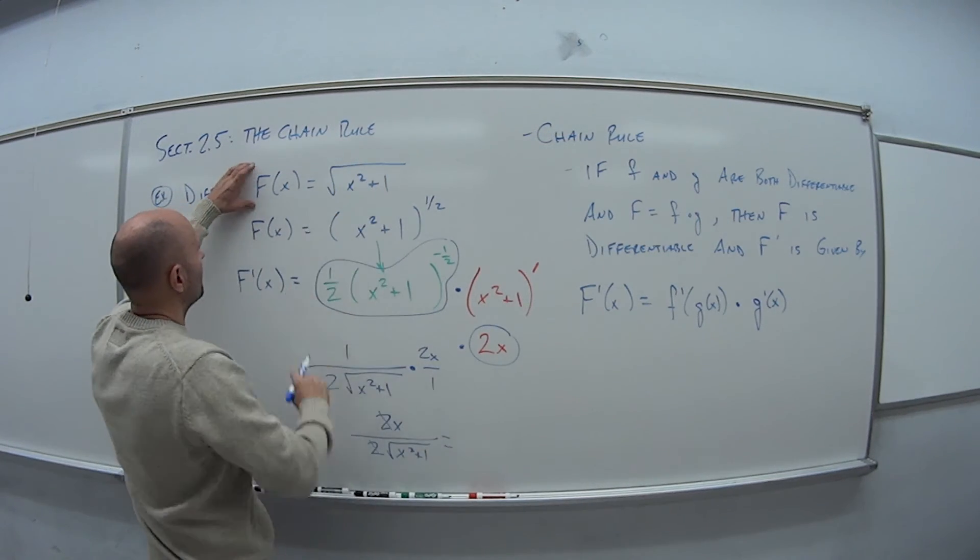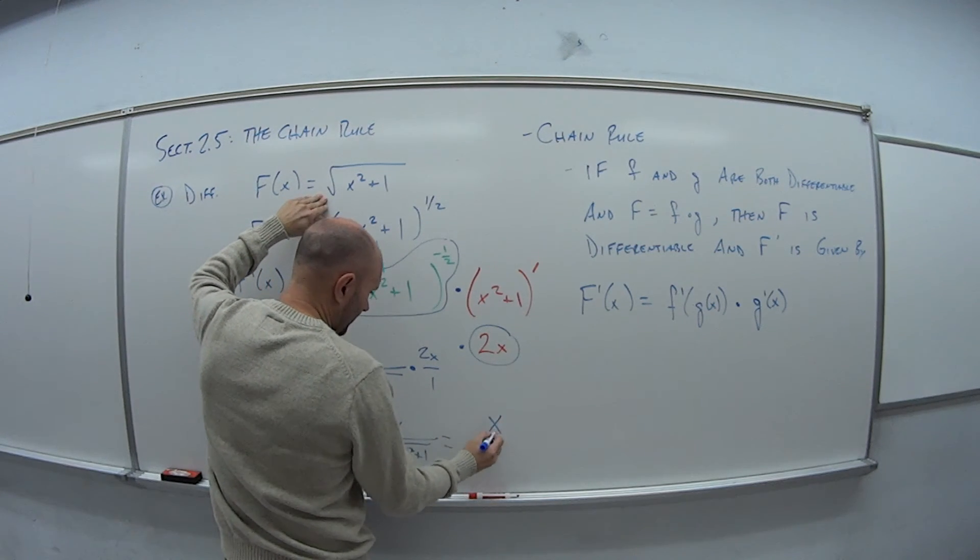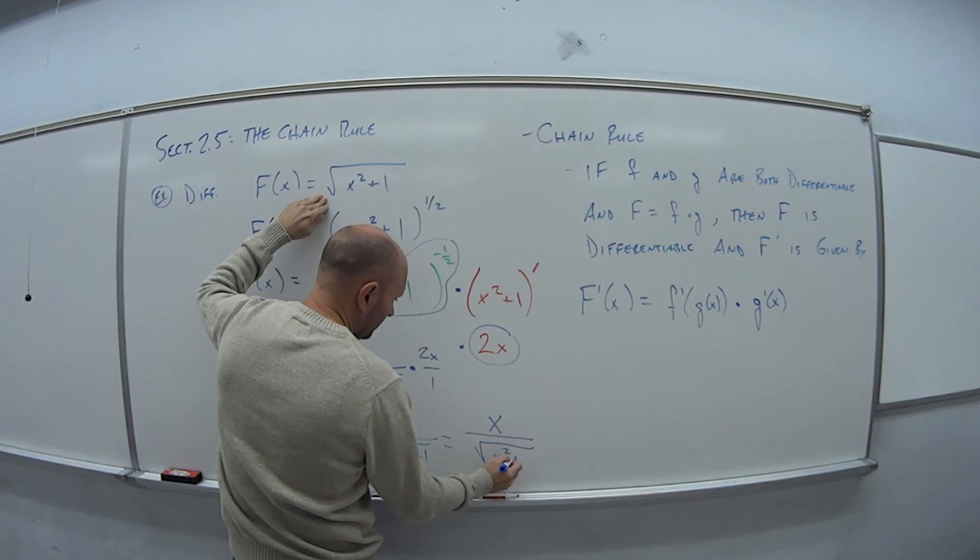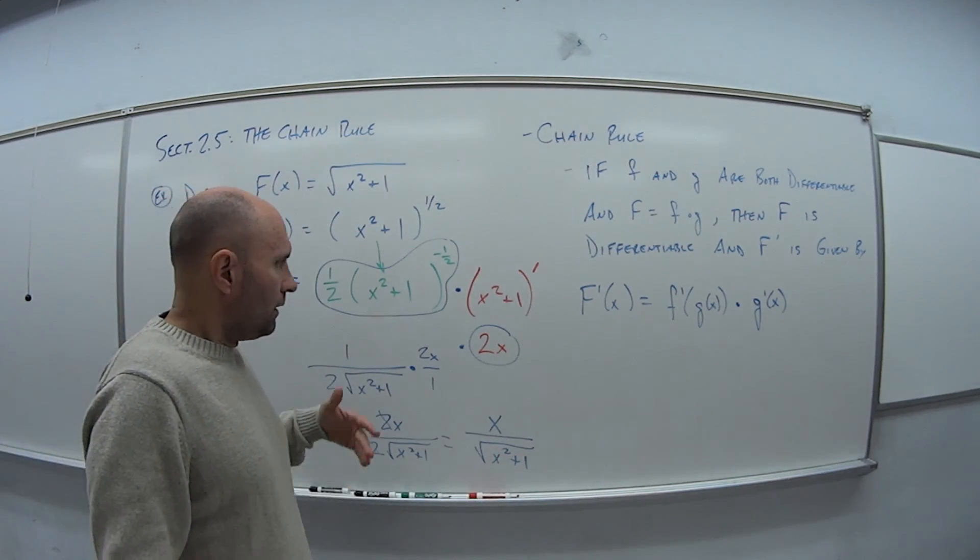So if I combine these, I get 2x over two times square root of x squared plus one.